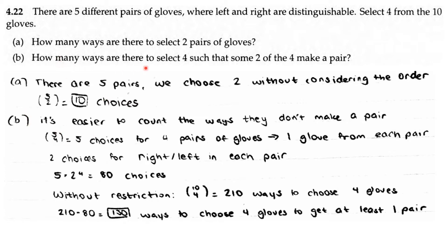For Part B, how many ways are there to select 4 such that some 2 of the 4 make a pair? It's easier to count the ways that they don't make a pair. We do 5 choose 4 choices for 4 pairs of gloves, with 1 glove from each pair so that they don't make a pair. There are 2 choices for right or left in each pair, so 5 × 2^4, since there are 4 gloves with 2 choices each, equals 80 choices.